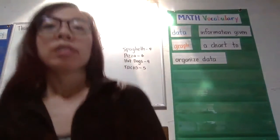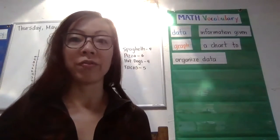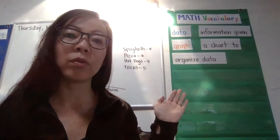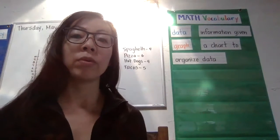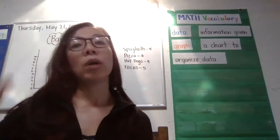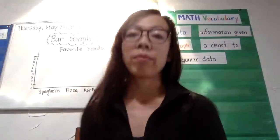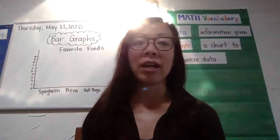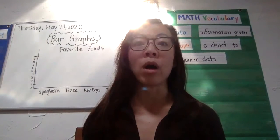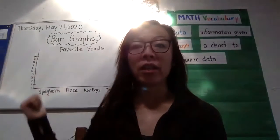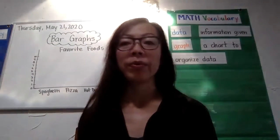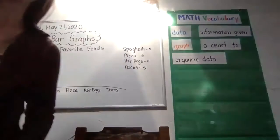Let's say we took a vote and people voted for their favorite foods: four people voted for spaghetti, six people voted for pizza, four people voted for hot dogs, and five people voted for tacos. We're going to look at our bar graph and instead of adding x's, dots, or symbols today, we're going to create a bar. We're going to find the number on the side and go up to that number to create a bar. Let's look at what that's going to look like.